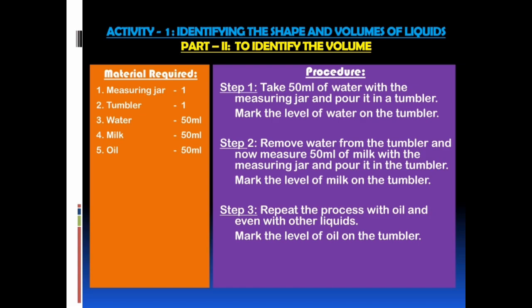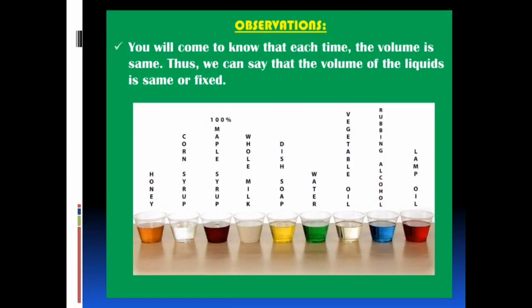Now, part 2 of our activity — to identify the volume. Material required: measuring jar, tumbler, water, milk, oil. Step 1: take 50 ml of water with the measuring jar and pour it in a tumbler; mark the level of water on the tumbler. Step 3: repeat the process with oil and other liquids and mark the level on the tumbler. Observations: you will find that each time the volume is the same. Thus, we can say that the volume of liquids is fixed.